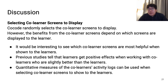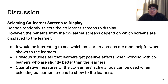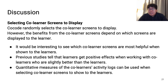Another topic is selecting which co-learner screens to display. The current version of CoreCode randomly selects co-learner screens, but the benefits depend on which screens are shown. As future work, it would be interesting to identify which co-learner screens are most helpful. Previous studies show learners get positive effects when working with co-learners who are slightly better than them, so quantitative measures from activity logs could guide screen selection.